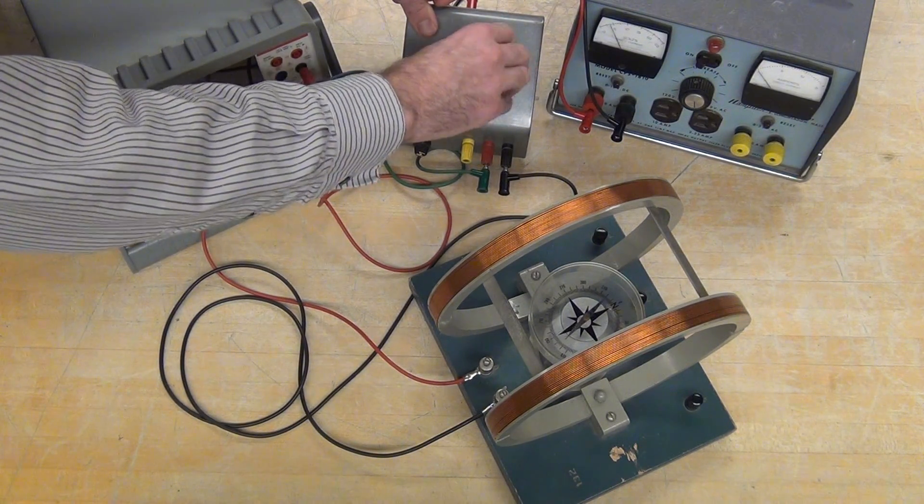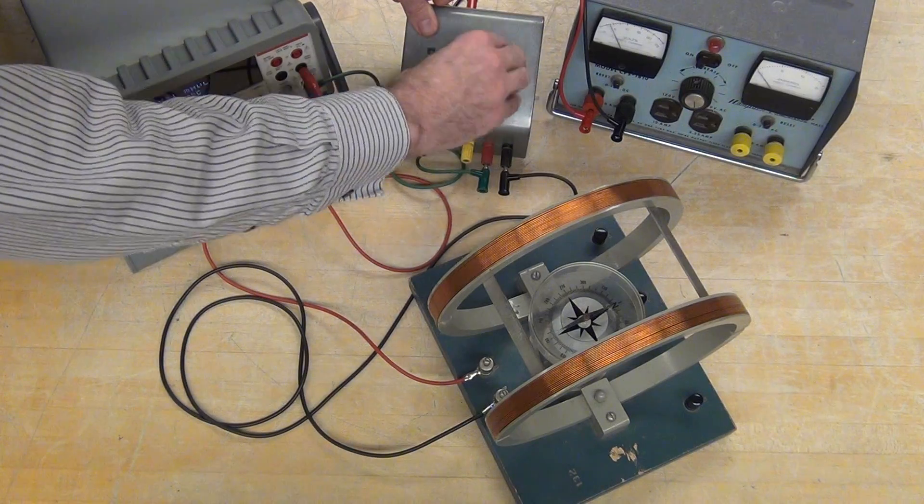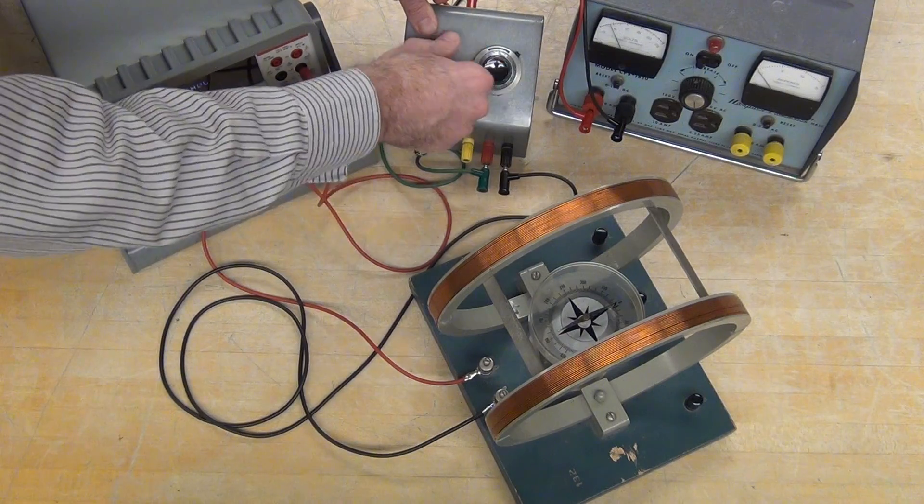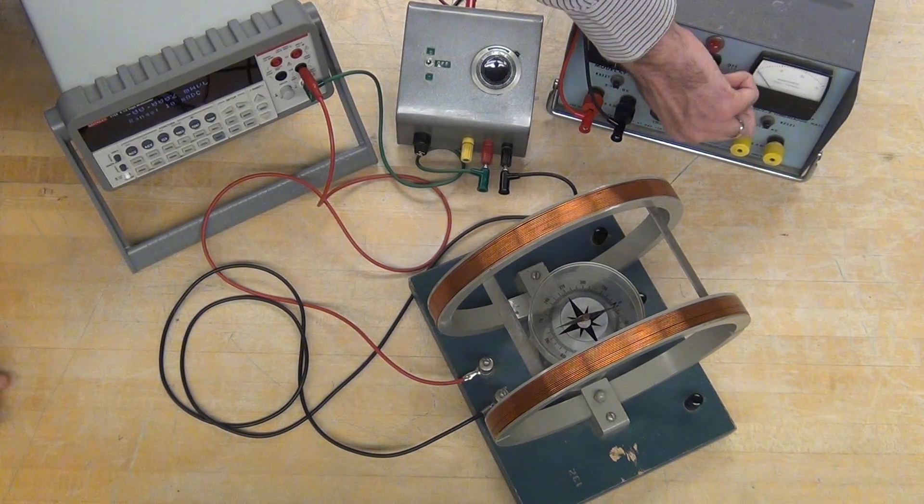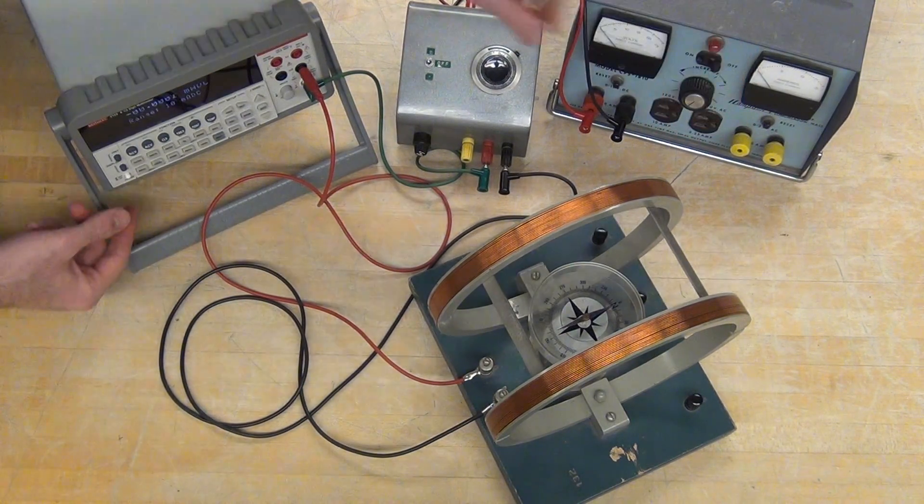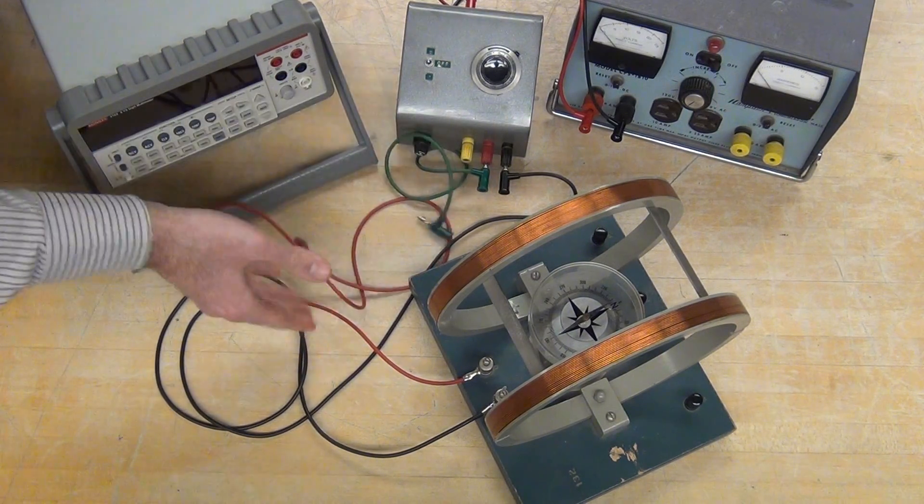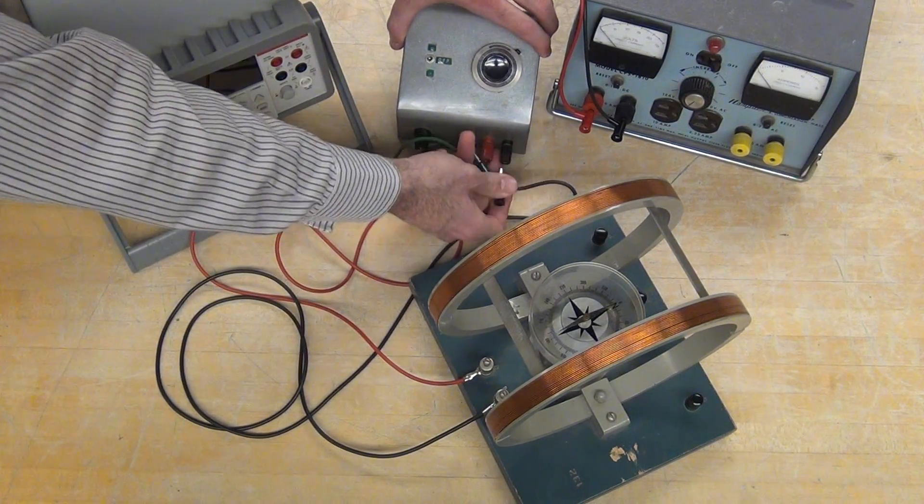You're going to go 20, 30, 40, 50, 60 degrees on both sides. When you're done, turn that all the way back to zero, turn it off, ramp that down, turn off, turn that off, and then disconnect everything and leave it neatly for the students in the next lab section.